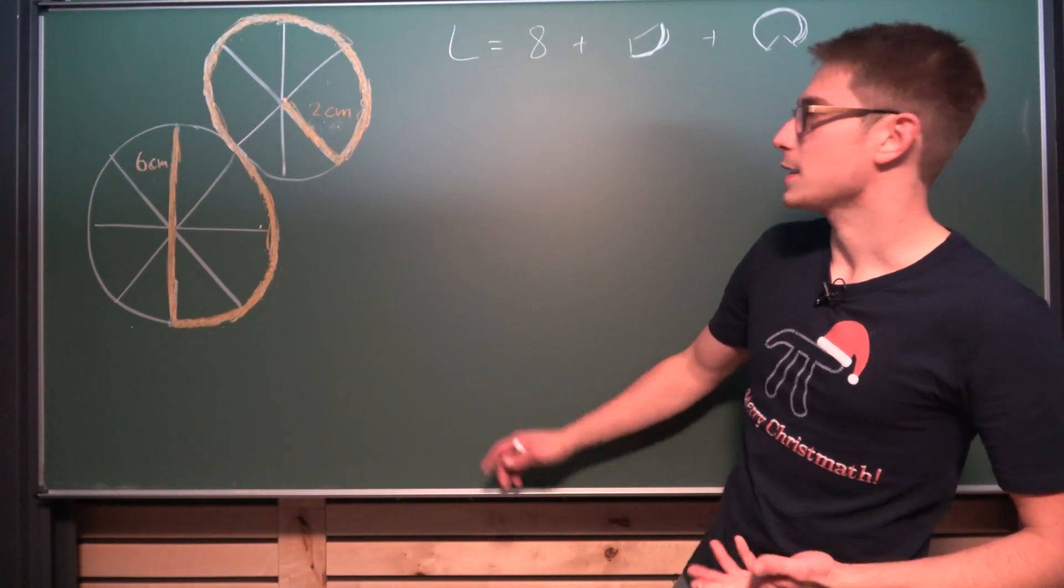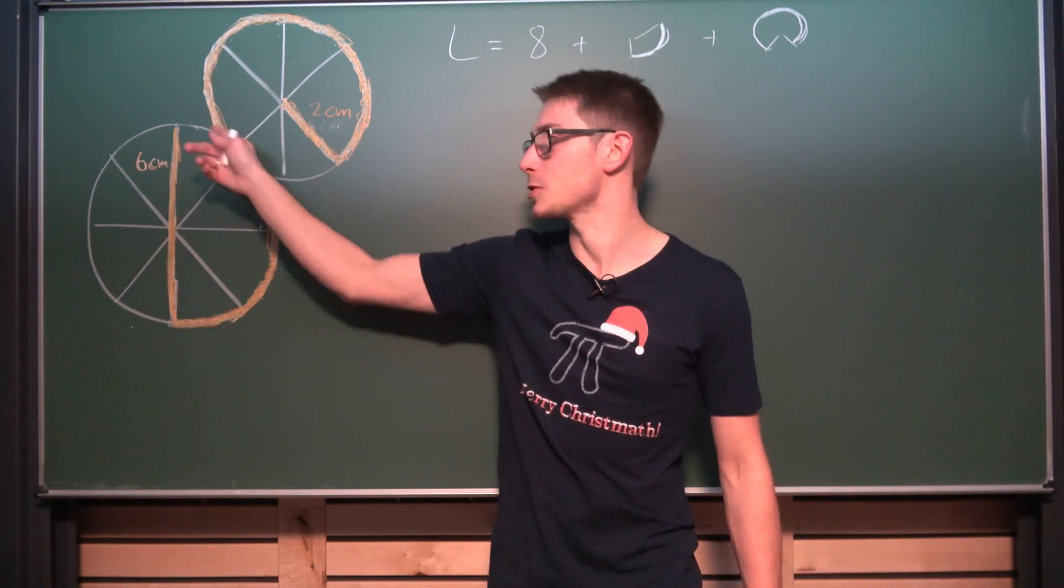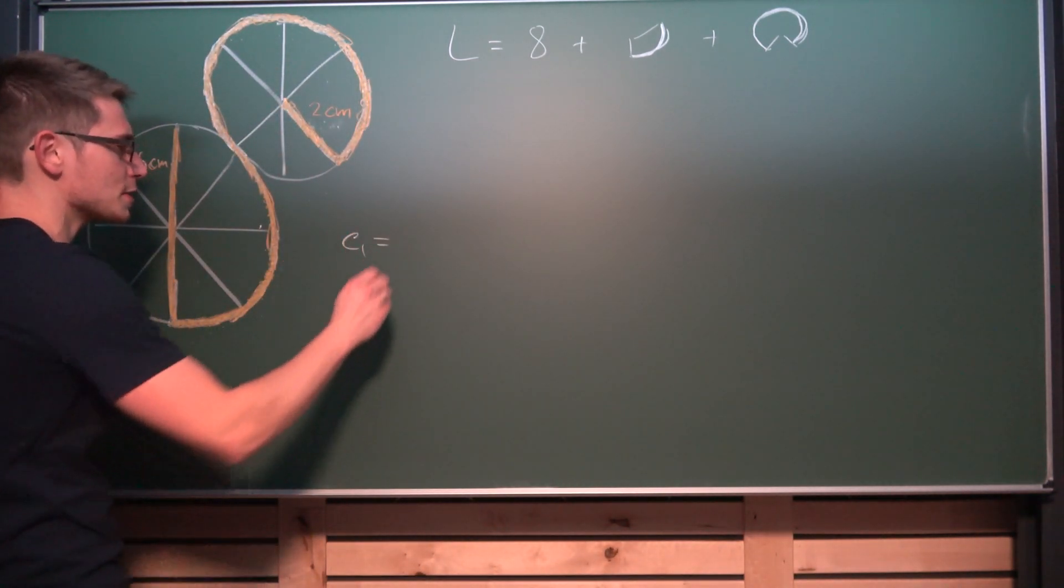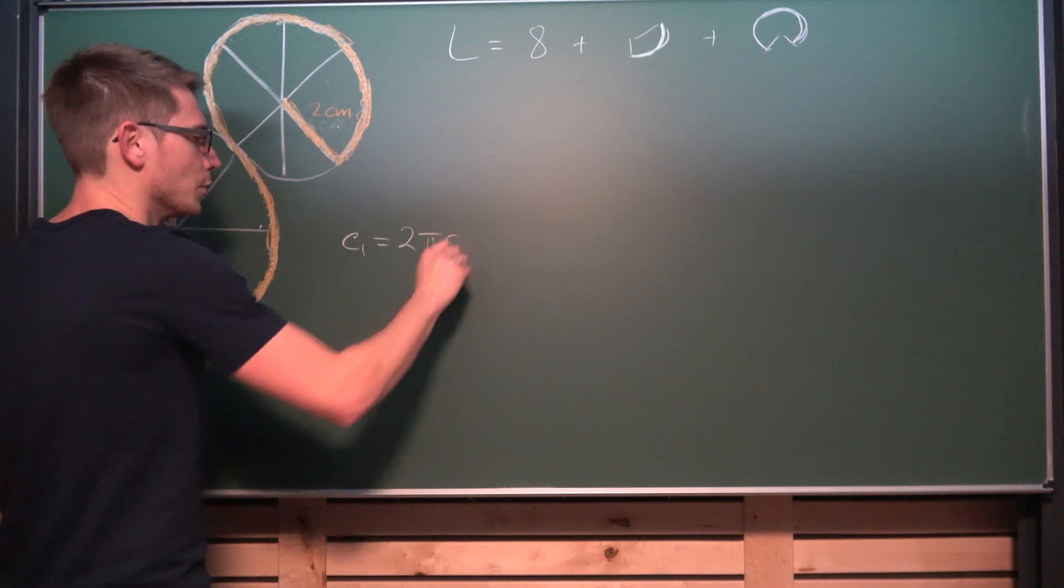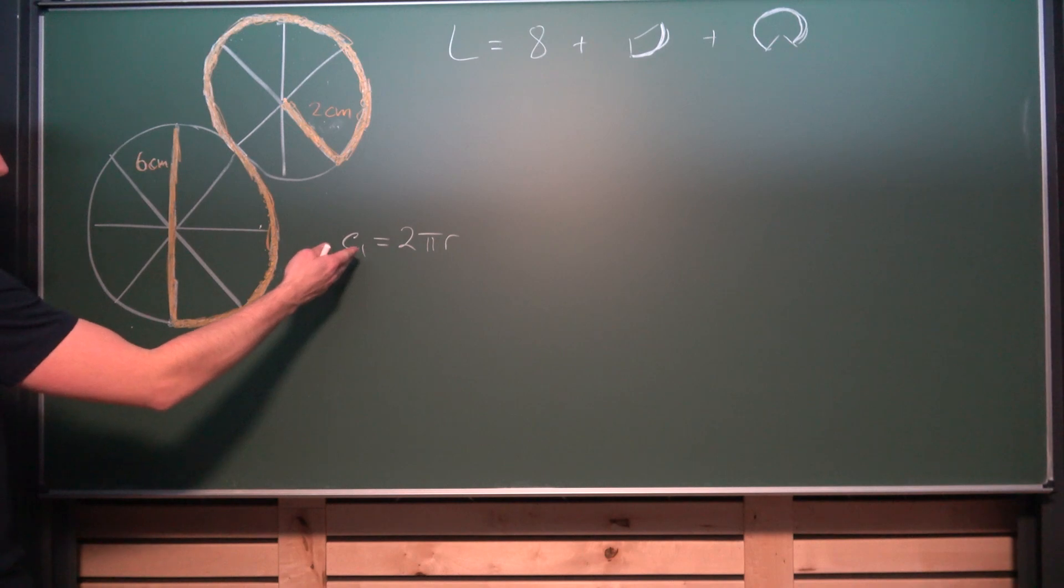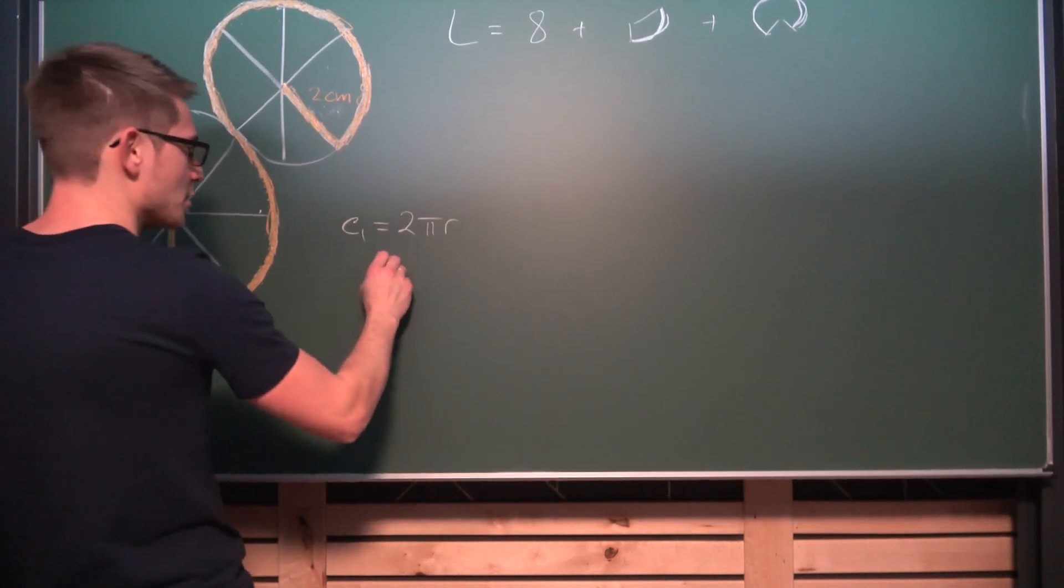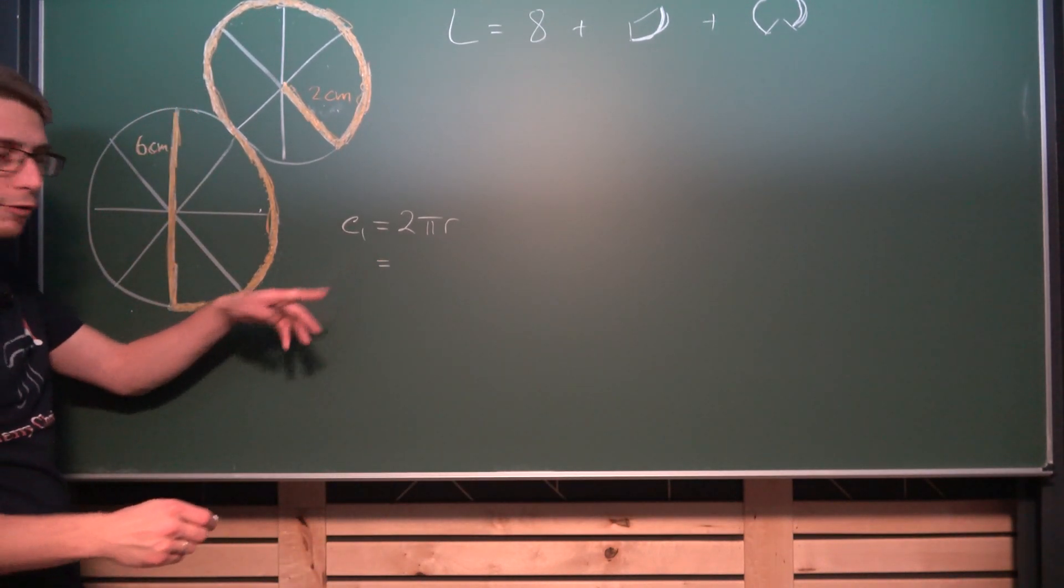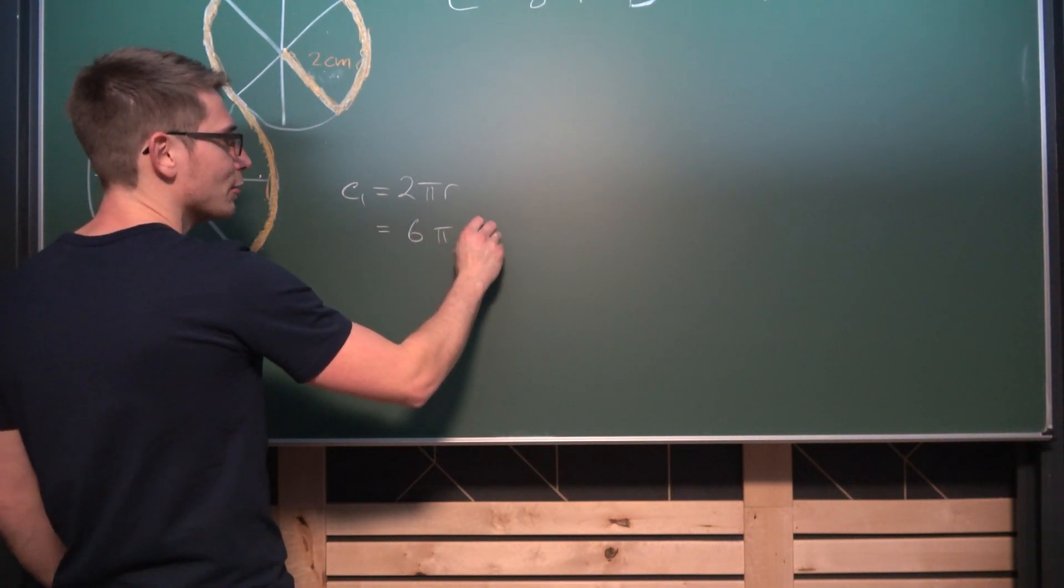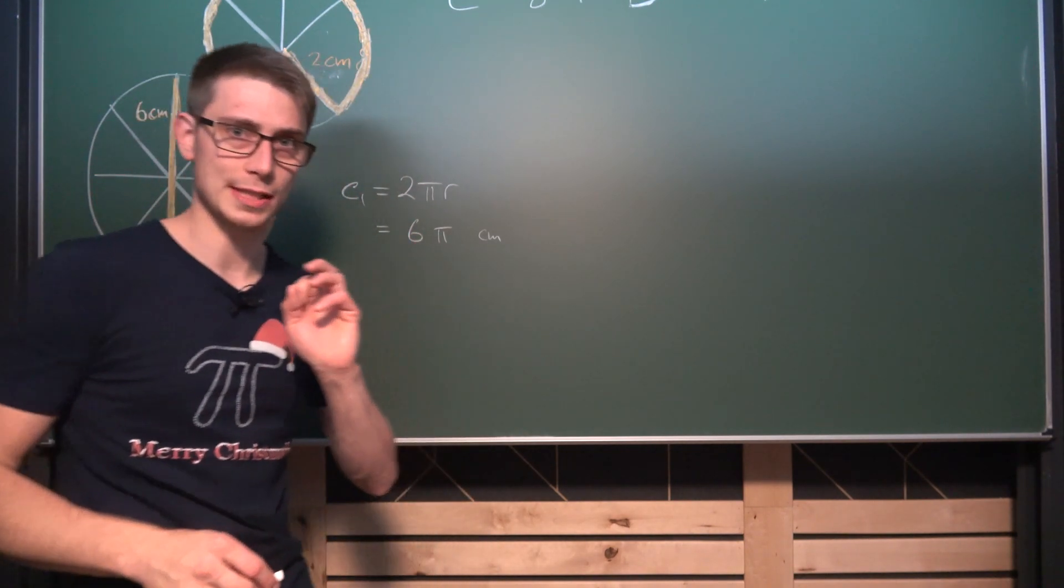So what we need here for this first part is just a part of the circumference of this whole circle. Let us at first find out what the whole circumference of this bigger circle is. The formula for the circumference is 2πr. But 2r is the same as the diameter. So we can also rewrite this circumference as π times the diameter. But we know what the diameter is. It's 6cm. So overall the circumference of the first circle is nothing other than 6π.